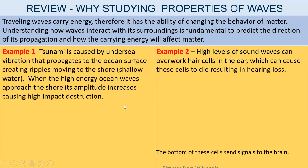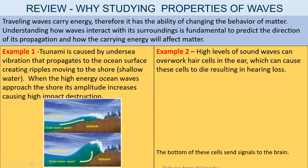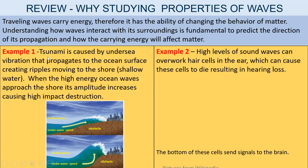Example 1: A tsunami is caused by undersea vibration that propagates to the ocean's surface, creating ripples moving to the shore from deep water to shallow water. When the high-energy ocean waves approach the shore, the amplitude increases, causing high-impact destruction.